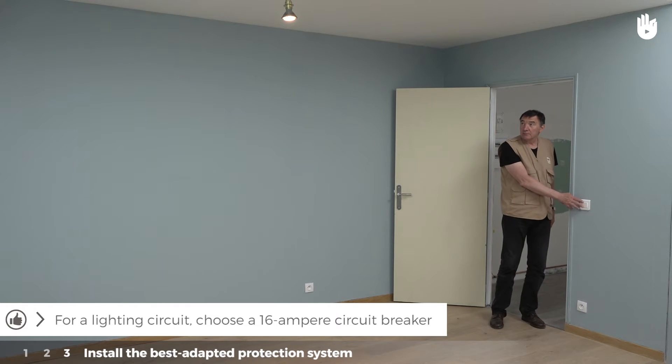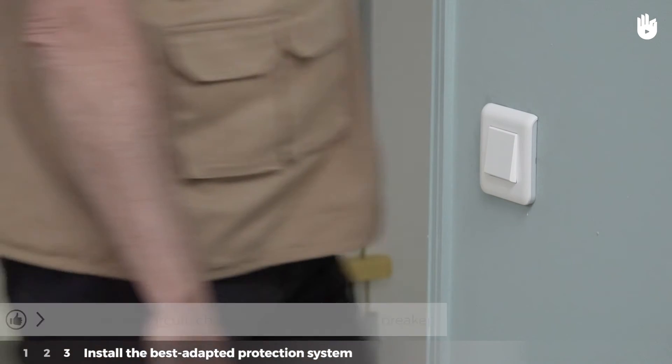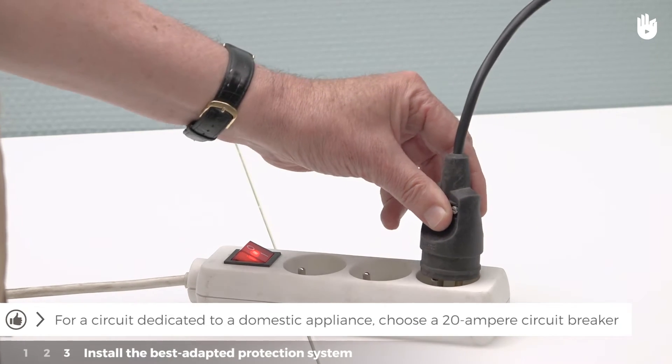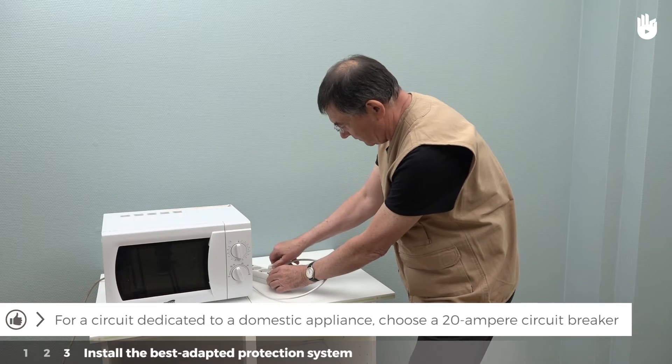For a lighting circuit, choose a 16A circuit breaker. For a circuit that has only 16A sockets or a circuit dedicated to a domestic appliance, choose a 20A circuit breaker.